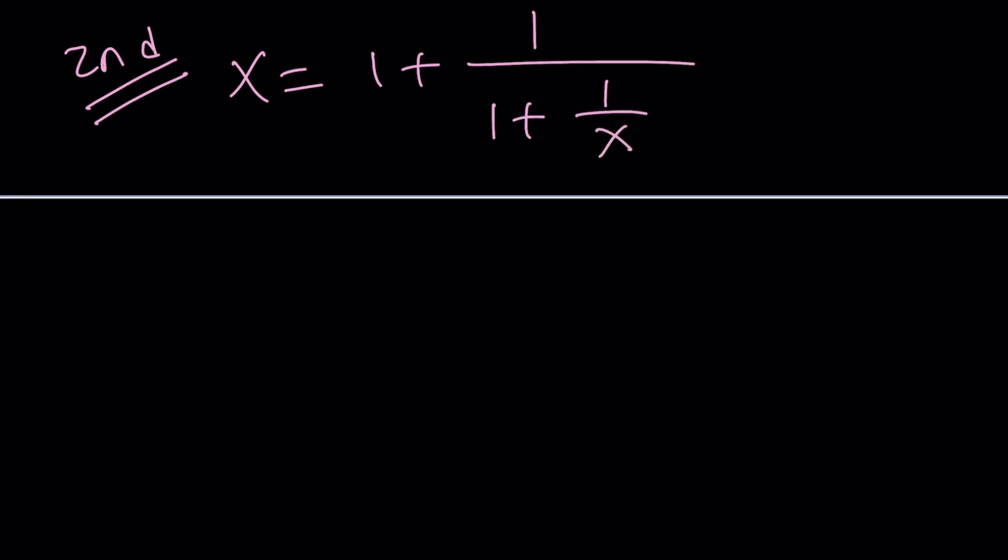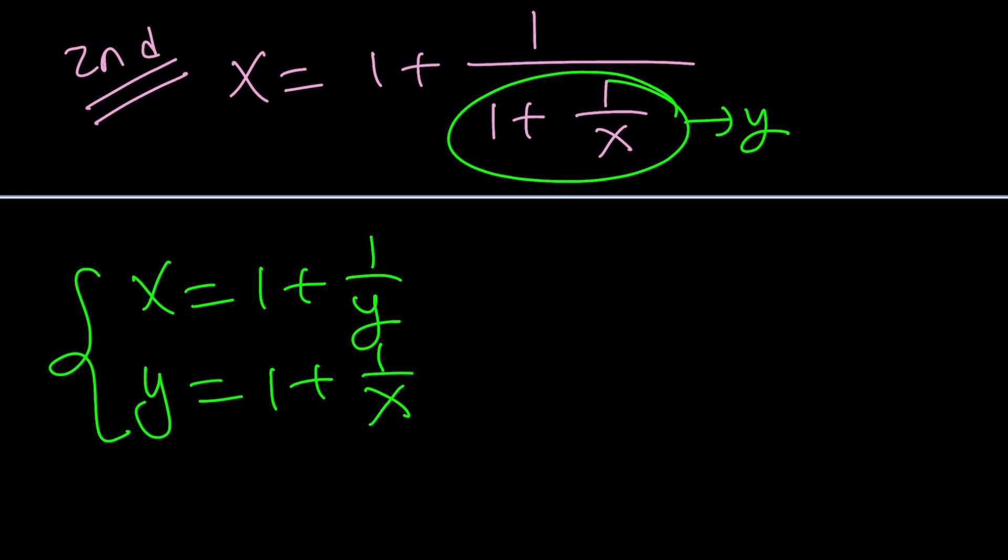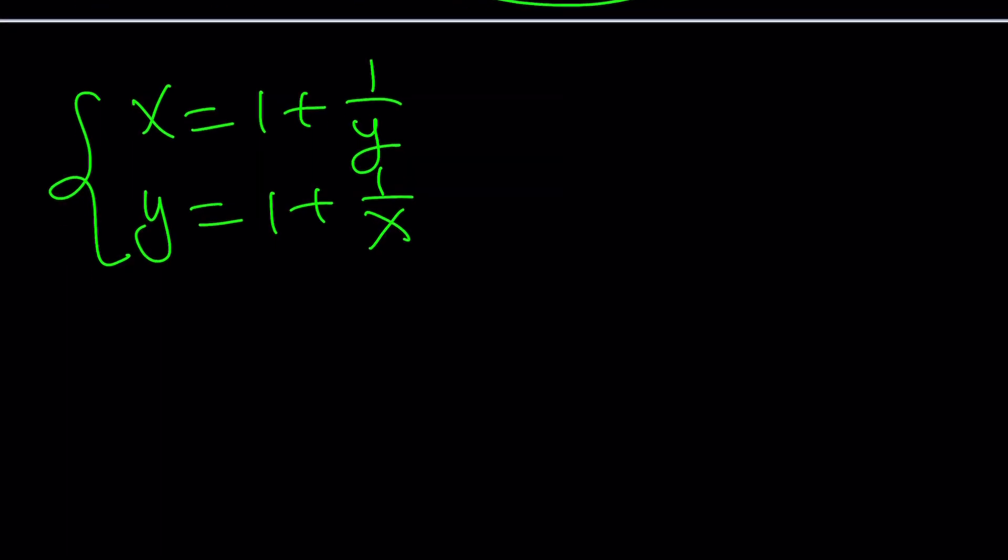I'm going to go ahead and call this y. And that gives me x equals 1 plus 1 over y. But at the same time, because of this naming, y equals 1 plus 1 over x. You get the idea? I'm turning my equation into a system. And this is valid as long as we don't hit negative 1 or 0, right? You know that.